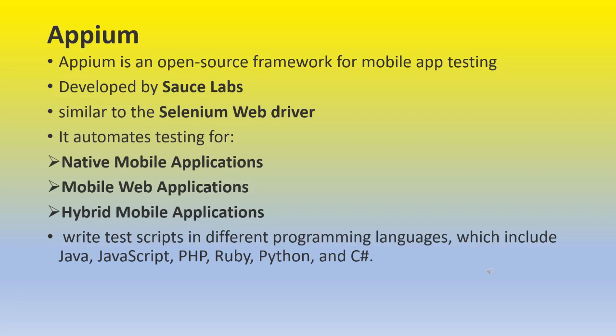The second type of application is mobile web application. That means we use a browser — it could be Chrome or Mozilla Firefox. If you have any browser on your mobile, that is a mobile web application. The third type is hybrid mobile application — it is called hybrid, and it is not specific to any single platform.